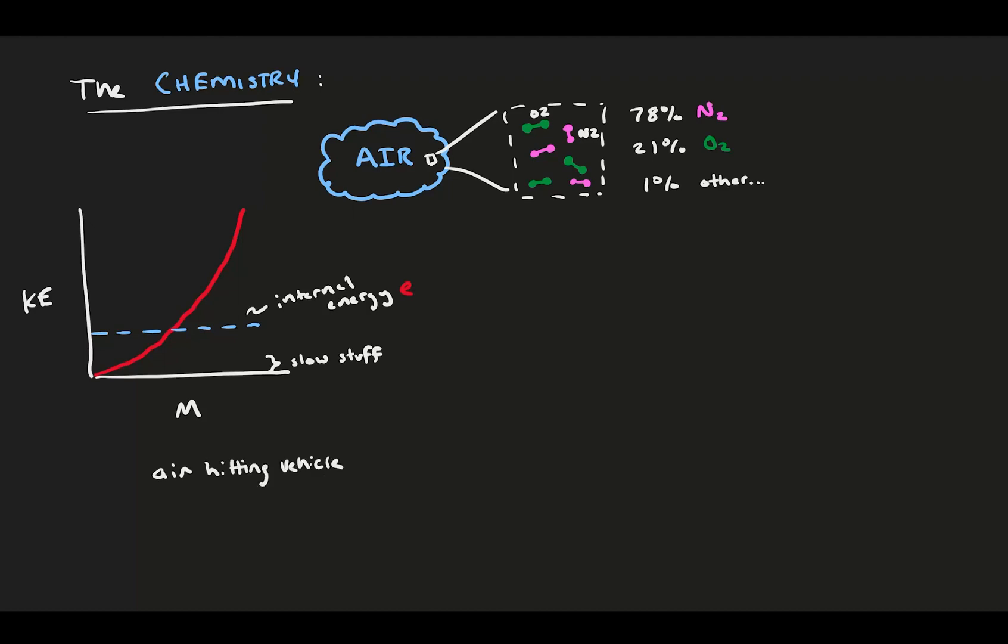When we first studied compressible flow, we talked about how at some point you have so much kinetic energy that it becomes meaningful to the internal energy of the fluid. And, when air moves very fast and hits a vehicle, a lot of it slows down dramatically, leading to a bunch of the kinetic energy becoming the internal energy. That is how we mark the cutoff for when flow becomes compressible, when the kinetic energy can meaningfully change the internal energy. Now, we consider what happens when the kinetic energy gets so high that it has the capability to mess with molecular and even atomic structure.